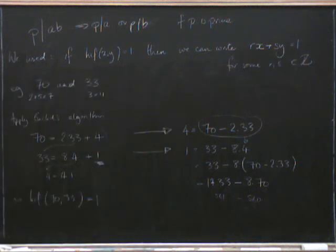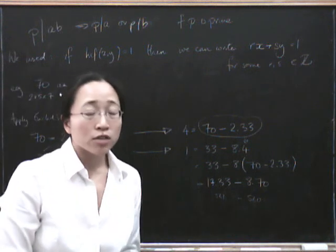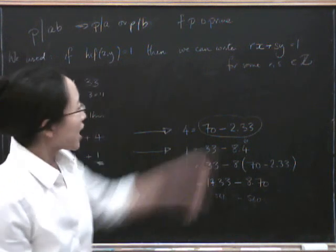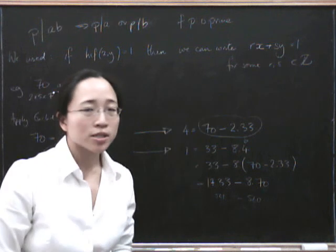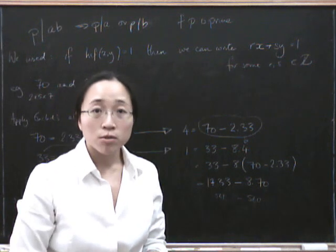So that is one example of how we go through Euclid's algorithm backwards to get 1 as an expression of these two numbers. And we'll do a few more examples now.